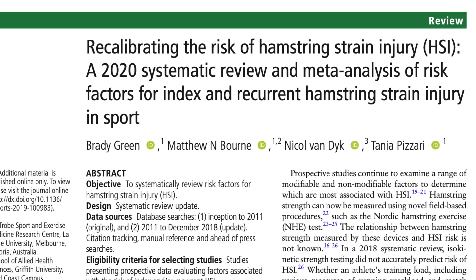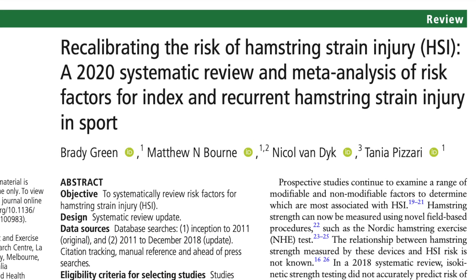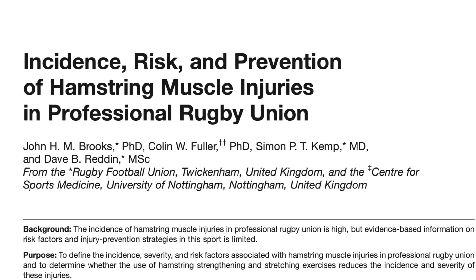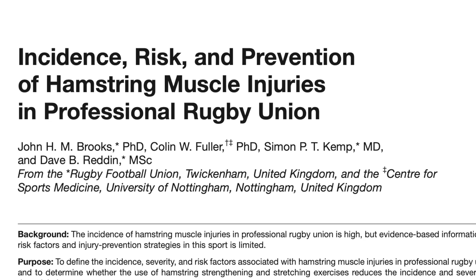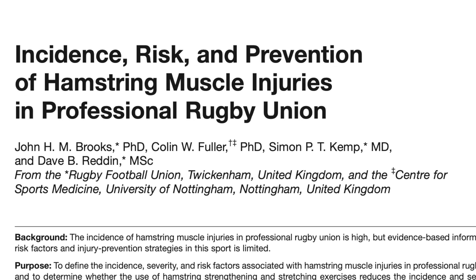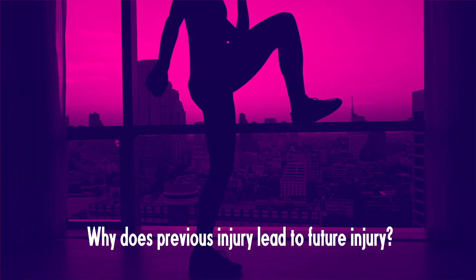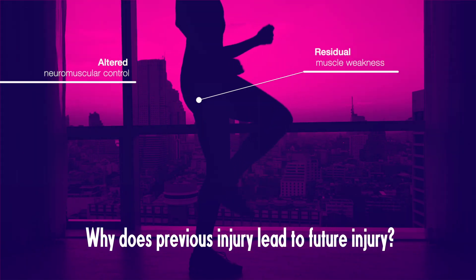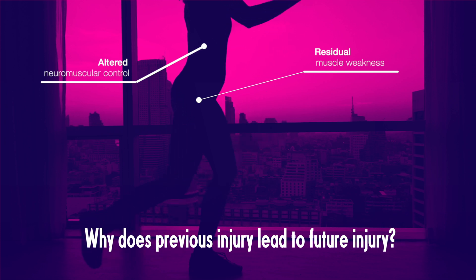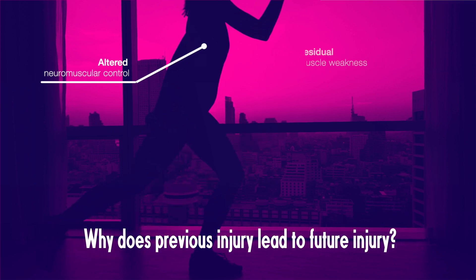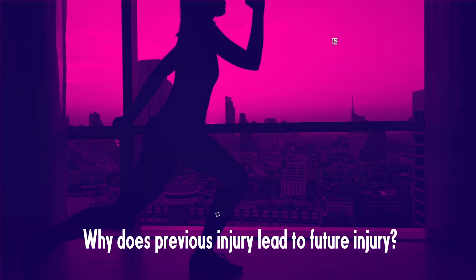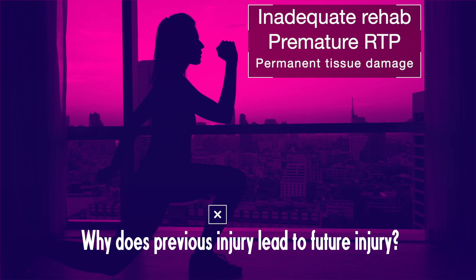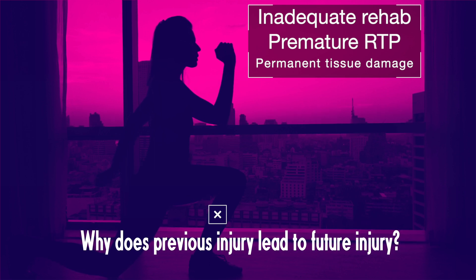Some studies have found that an athlete with a previous history of muscle injury has up to three times the risk of a non-injured athlete, and that this persists for up to a year or longer post the initial injury. The heightened risk associated with a previous injury is thought to be due in part to residual muscle weakness or altered neuromuscular control, which can last up to several months according to some laboratory and clinical studies. But the role of inadequate rehabilitation, premature return to sport and permanent tissue damage resulting from the initial injury are topics of ongoing debate.